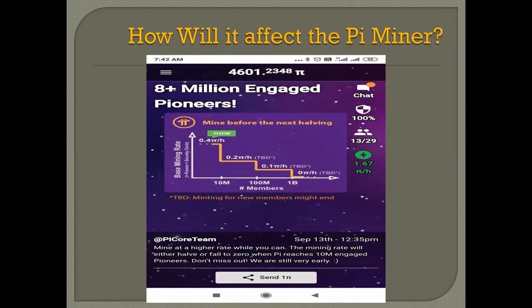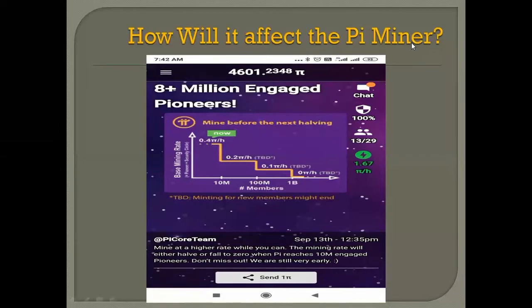Suppose a person, as of today, is earning 24 Pi per hour. Once the pioneer count reaches 10 million, his earning will be reduced to half — that is, his earning will be reduced to 12 Pi per hour. This is how halving will affect the Pi miner. So it is better for us to earn more Pi right now before the halving takes place.